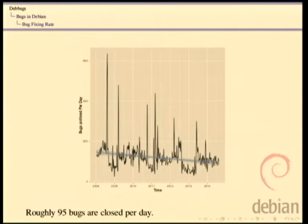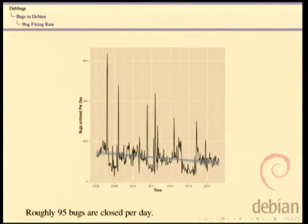This is the bug closing graph — technically bugs being archived, which approximates the bug closure rate with a lag time of about two weeks. We close roughly 95 bugs a day, so the bug system is gaining about 50 bugs every day that are not being fixed. The bug closure rate is decreasing, and in context with the bug reporting rate also decreasing, this is actually kind of disturbing. I'd much rather see the overall rate increasing than decreasing over time.